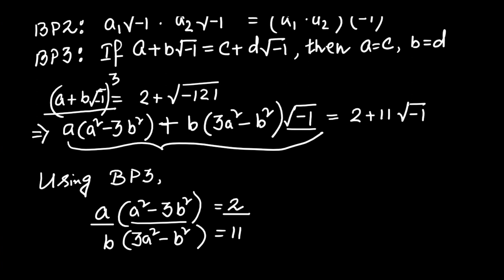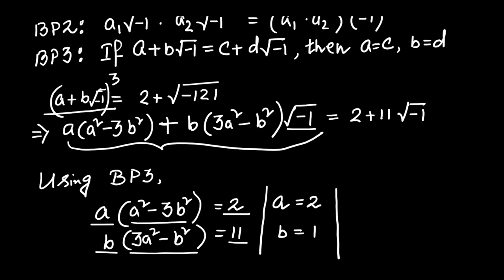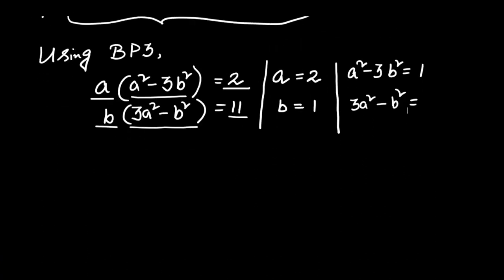Since 2 is prime, one of the two factors must equal 1; similarly for 11. Considering A = 2 and A² − 3B² = 1, and B = 1 and 3A² − B² = 11: if A = 2 and B = 1, then A² − 3B² = 4 − 3 = 1 ✓, and 3A² − B² = 12 − 1 = 11 ✓. This assumption fits perfectly, and other assumptions lead to infeasibility — so this is the only possible solution.